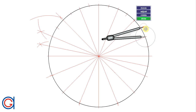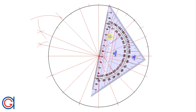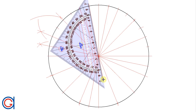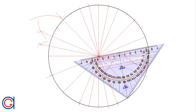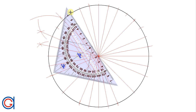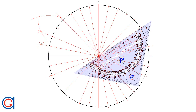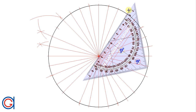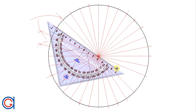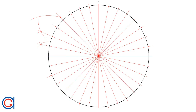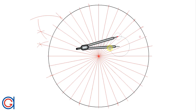So again we scribe both sides and now we draw our diameters and our last diameter. Now we have our 32 equal parts.